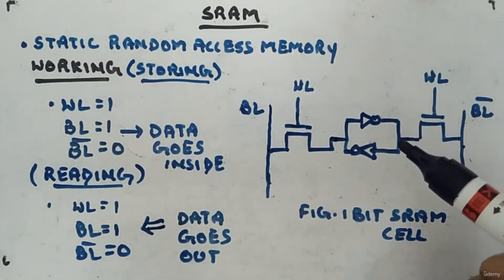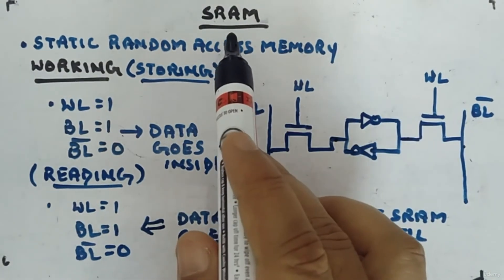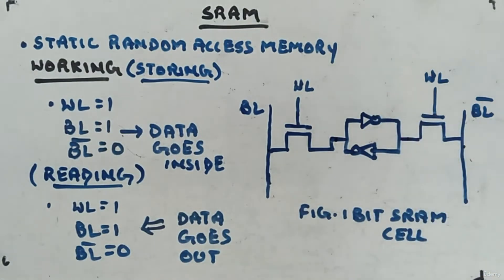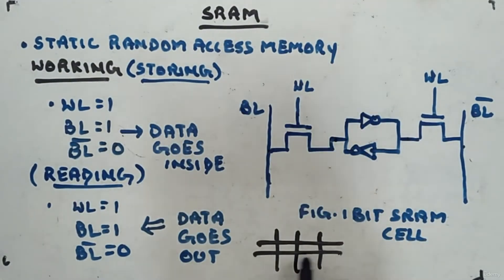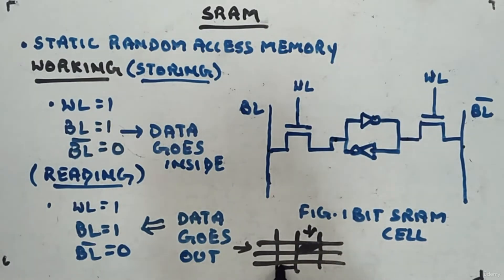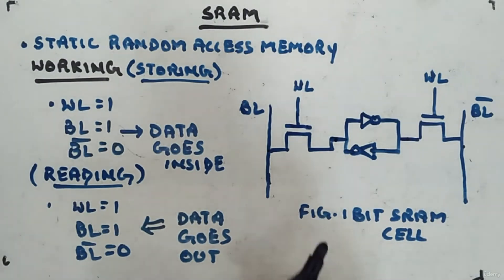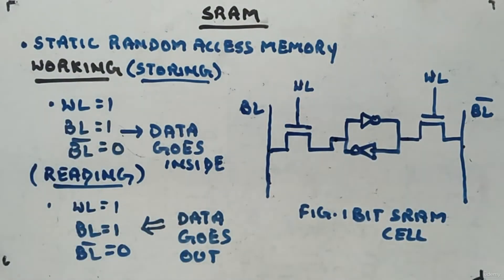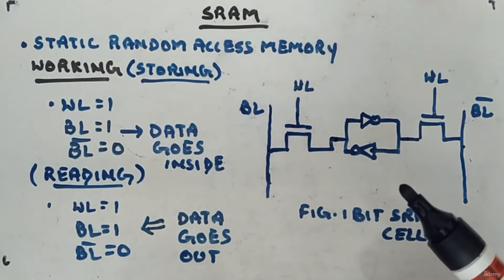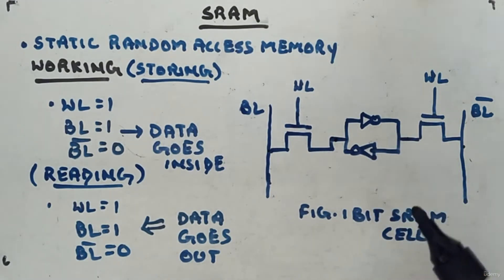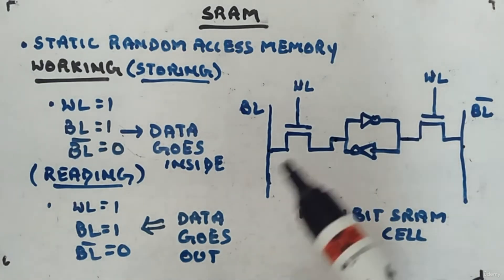The data stays locked in the cell, which is why it consumes more power — the data has to be kept there continuously. It is a volatile memory, so you need to give power all the time to save the bit. It is random access because you can access any location by selecting the appropriate row and column. It is static because it keeps the data permanently — as long as you don't switch off or change the data.